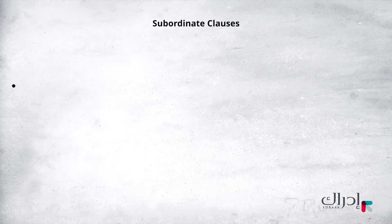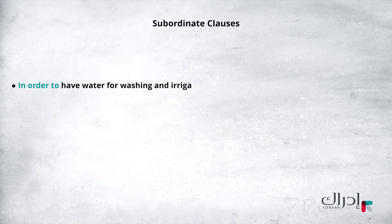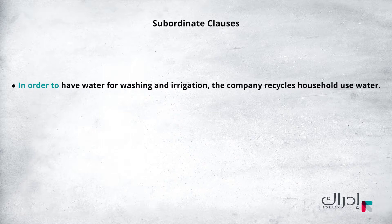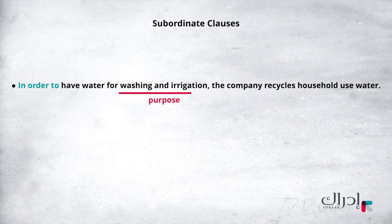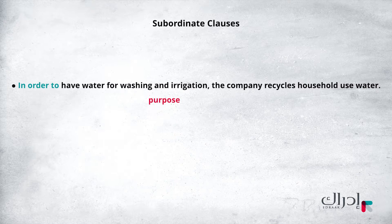I want to now talk about the use cases for subordinate clauses. Let's look at some examples from the modules which present more context. 'In order to have water for washing and irrigation, the company recycles household use water.' In this example, we are emphasizing the purpose. So for washing and irrigation purposes, the company recycles their water. We put the purpose in a subordinate clause at the beginning of the sentence. Recall that the subordinate clause in this case — 'in order to have water for washing and irrigation' — cannot stand alone as a sentence.